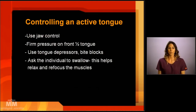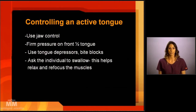This will cause gagging. Some other tips for controlling an active tongue is to use jaw control, place firm pressure on the front half of the tongue, and use a tongue depressor if needed. There are also bite blocks available to help keep the mouth open so that you can manage the tongue. If that doesn't work, just ask the individual to swallow, as this does help relax the tongue muscle.